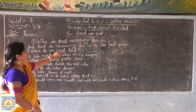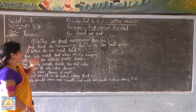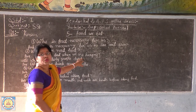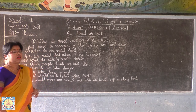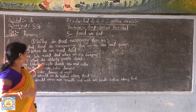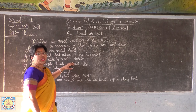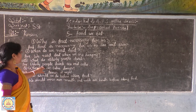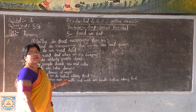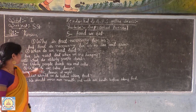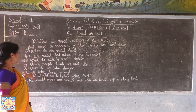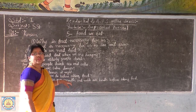When do we need food? We need food when we are hungry. What do elderly people drink? Elderly people drink tea and coffee. When do we take dinner? We take dinner at night.